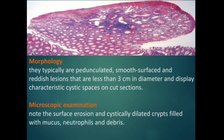Regarding morphology, juvenile polyps are typically pedunculated, smooth-surfaced, and reddish lesions less than 3 cm in diameter, and display characteristic cystic spaces on cut section. On microscopic examination, note the surface erosion and cystically dilated crypts — an important morphological feature — filled with mucus, neutrophils, and debris.